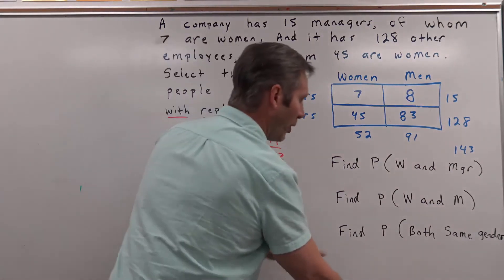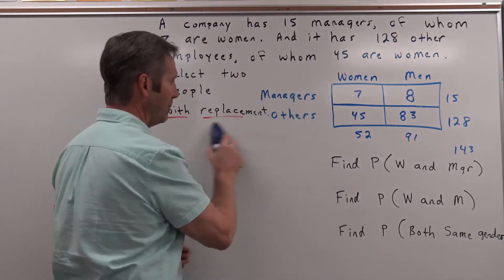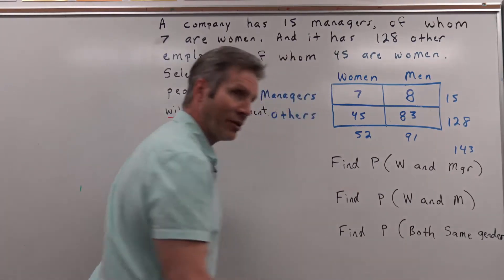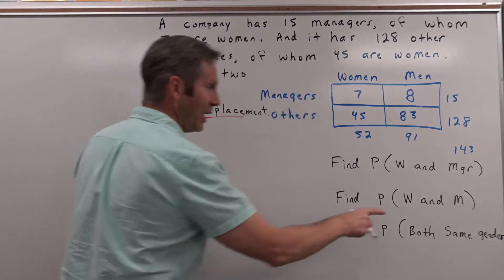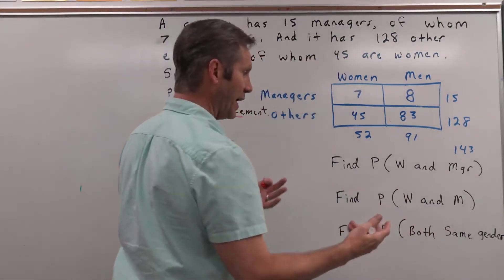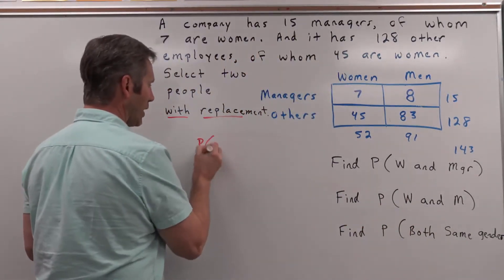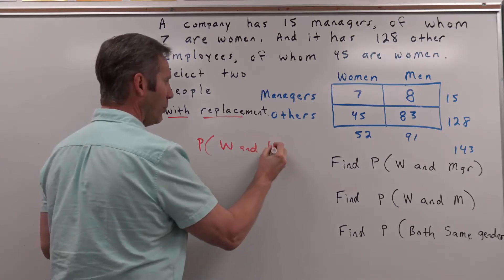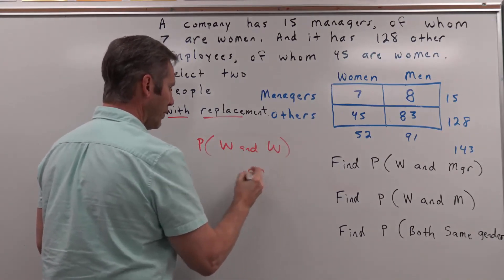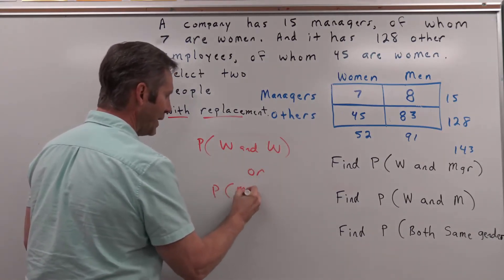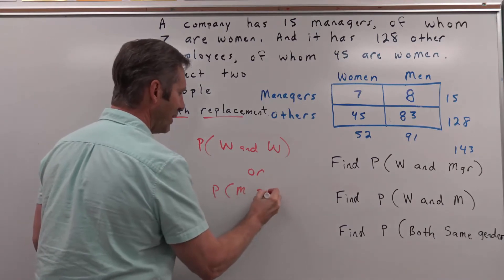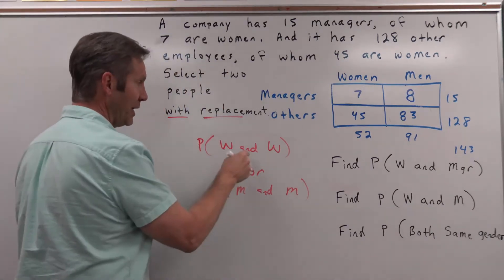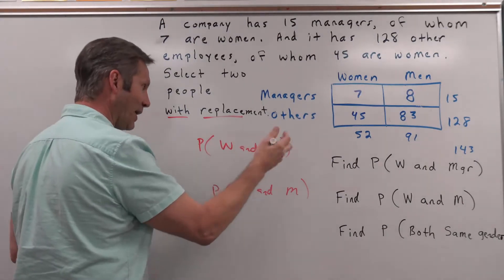Now, what's the probability we get both of the same gender? This is where rephrasing with 'and' and 'or' comes in. What are the two ways we could get the same gender? We're looking at the probability we get a woman and then a woman, or the probability that we get a man and then a man. The word 'or' means add, and the word 'and' means multiply.